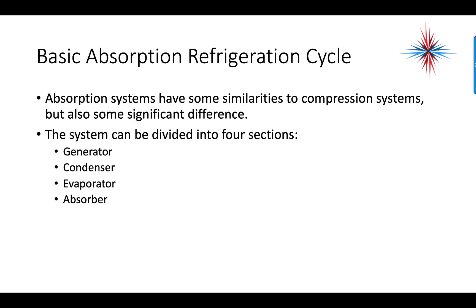The basic absorption refrigerant cycle has some similarities to a compression system, but also some significant differences. A system can be divided into four sections: a generator, a condenser, an evaporator, and an absorber.